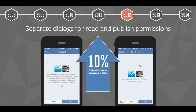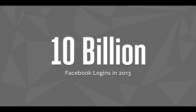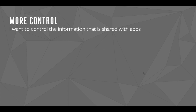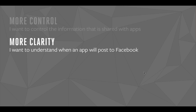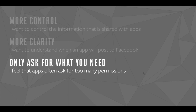When we started thinking about the new Facebook Login, we began by asking people what they wanted. Today, people log in with Facebook over 10 billion times in the past year. When we asked people what they wanted with the new Facebook Login, they basically gave us three things. First, people want more control over the information that is shared with apps. Second, people want more clarity — they want to understand when an app will post to Facebook. And finally, people feel that some apps often ask for too many permissions.